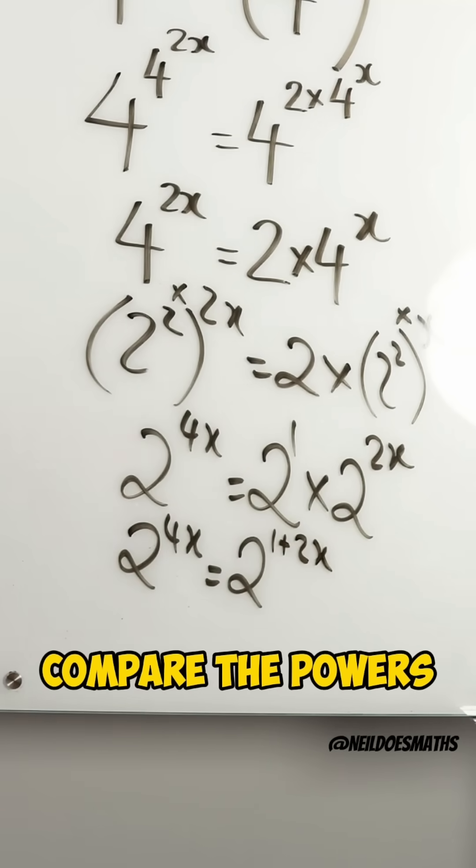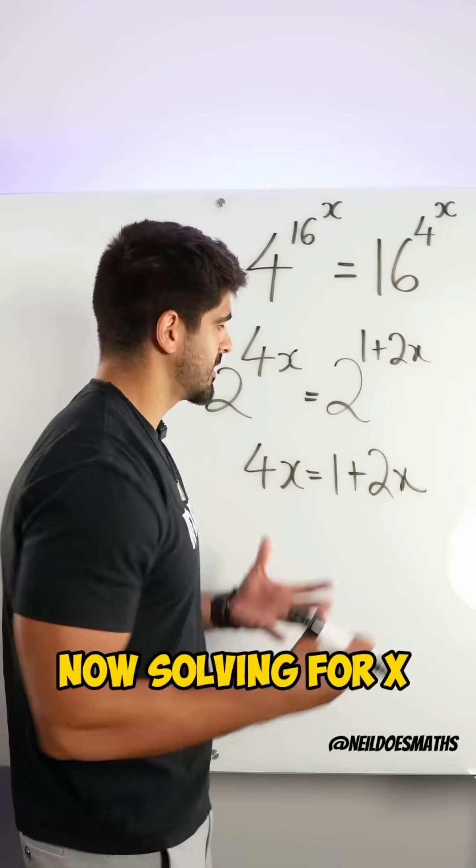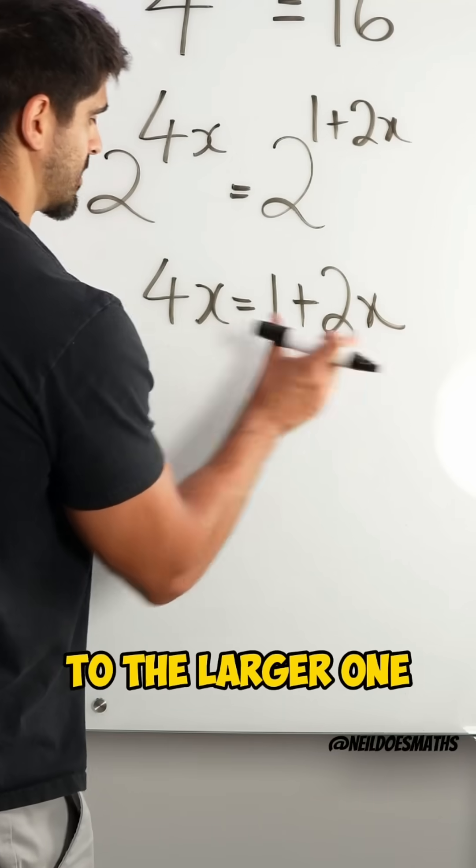Now, finally, we just compare the powers. Now, solving for x, nice and simple. We always bring the smaller x to the large one. We get a minus 2x from both sides.